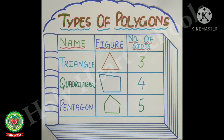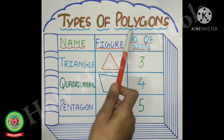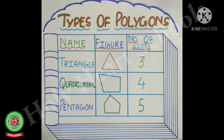Now let's understand the types of polygons. The name of a polygon depends on the number of sides it has. Let's understand types of polygons on the basis of sides.